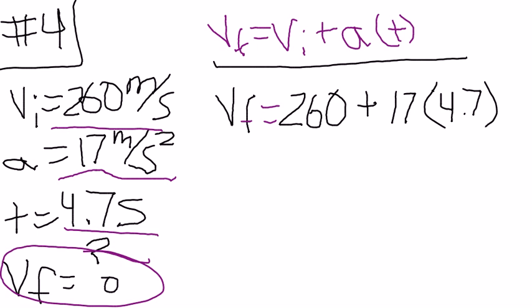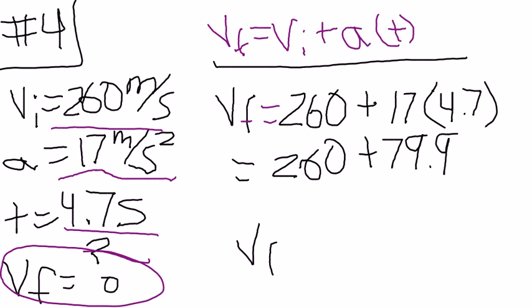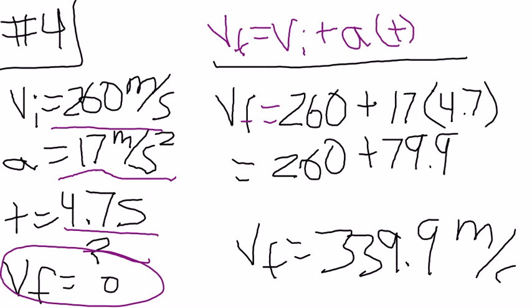You do simple math from here, so 260 plus 79.9 will equal a final velocity of 339.9 meters per second, and that's it.